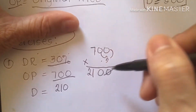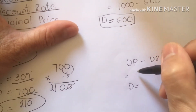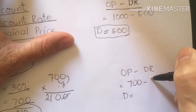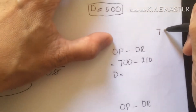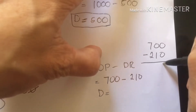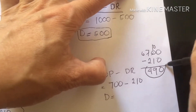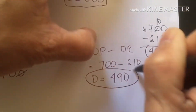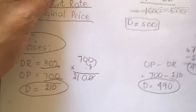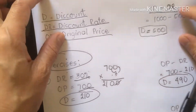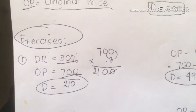This is a big discount amount. The original price of that particular product — for example, a bag — is 700 minus 210. We subtract 210 to know the payable amount. 700 less 210: 0 becomes 10, 7 becomes 6, 10 minus 1 is 9, 6 minus 2 is 4. So our payable amount is 490 pesos. This is important for students to know how to compute these problems.